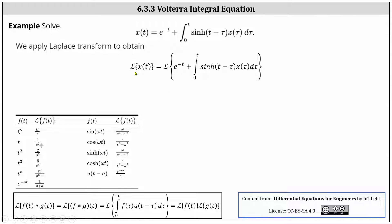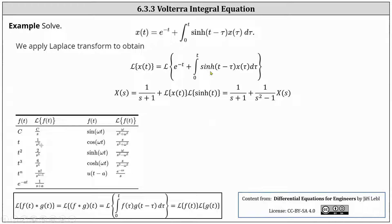On the left, the Laplace transform of x of t is equal to big X of s. On the right, the Laplace transform of e to the negative t, using our table below, is equal to one divided by the quantity s plus one. And then we have plus the Laplace transform of the convolution of x of t and hyperbolic sine t, which using our notes is equal to big X of s times the Laplace transform of hyperbolic sine t, which is equal to one divided by the quantity s squared minus one. Notice I use the commutative property to change the order of multiplication.